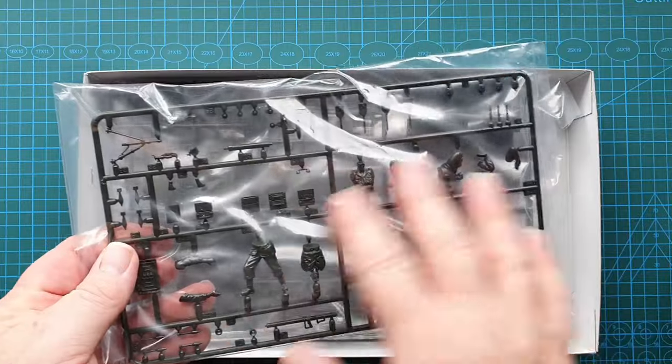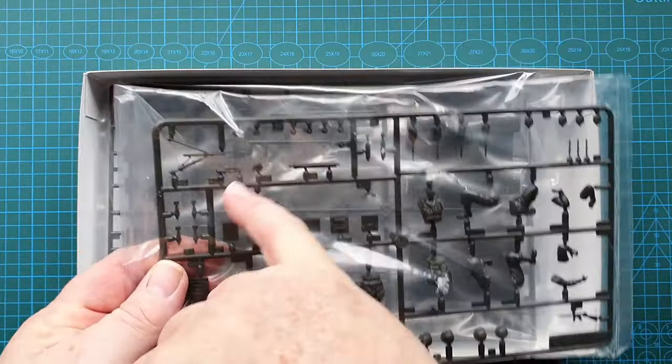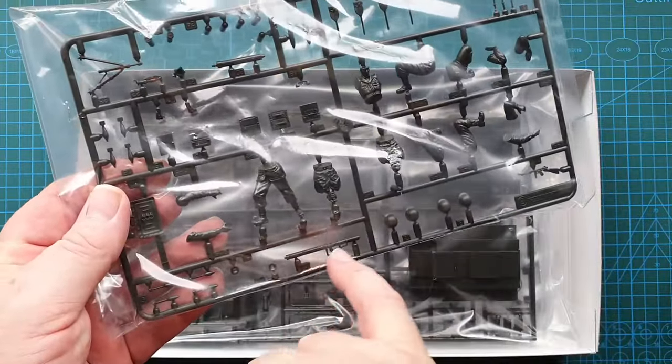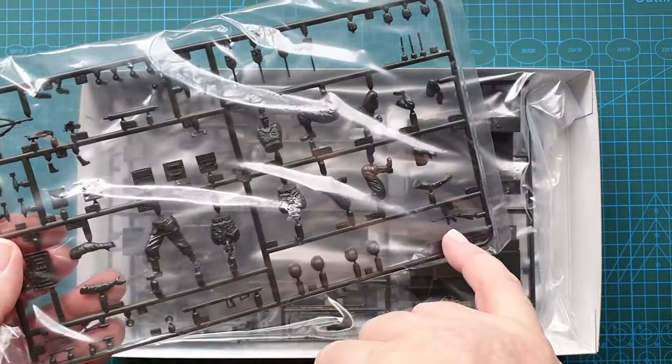One sprue which has got your crew, the mortar itself. You do have a bazooka in there as well as an accessory tommy gun.